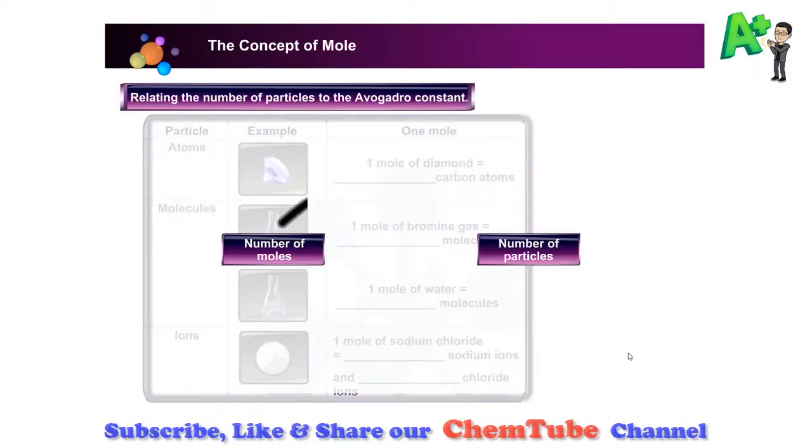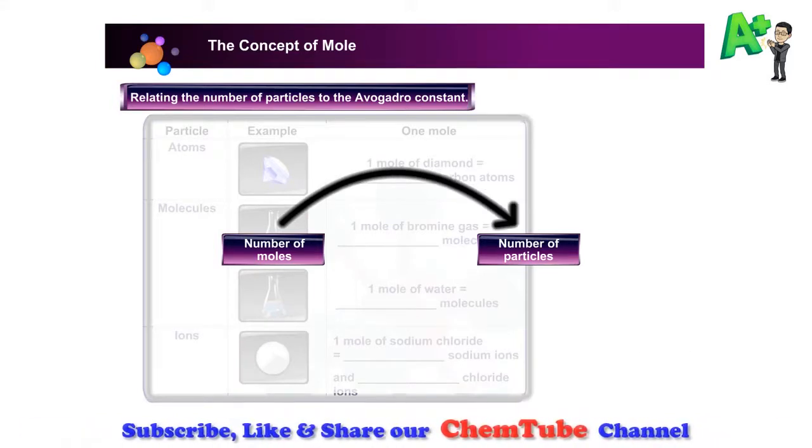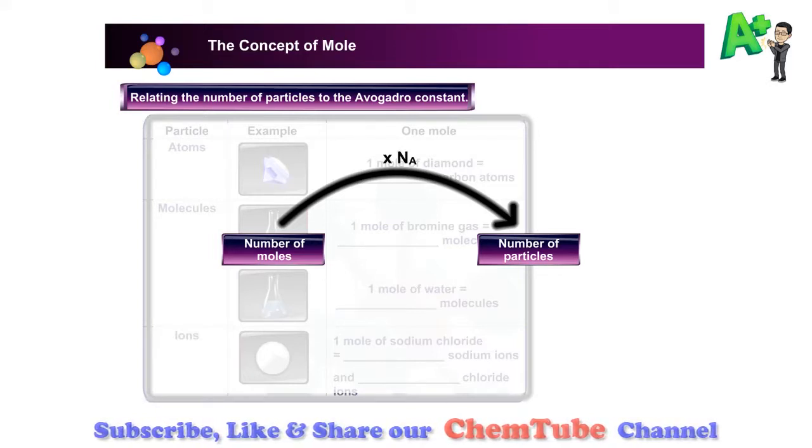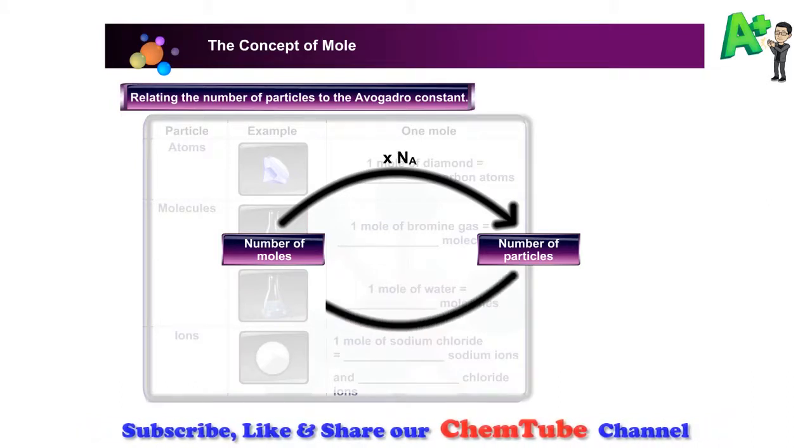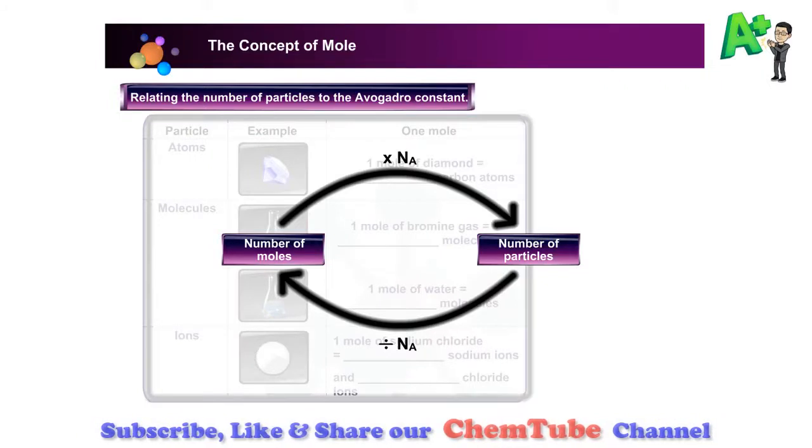We can convert the number of moles of any substance to the number of particles of that substance. We can convert the number of particles to the number of moles of that substance. Dividing the number of particles of a substance by the Avogadro constant gives us the number of moles of the substance.